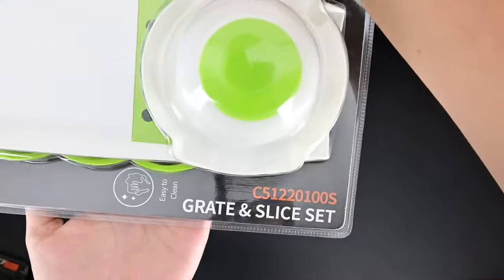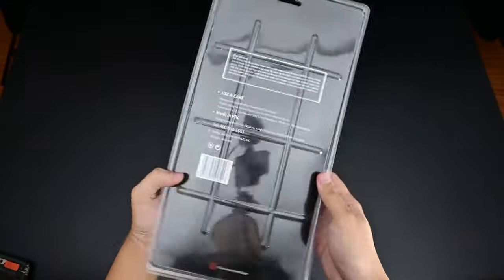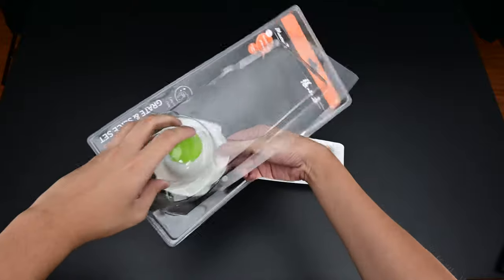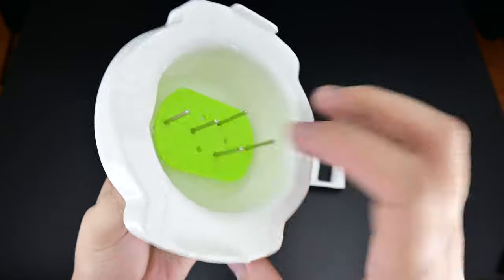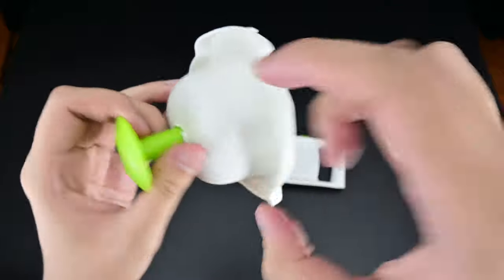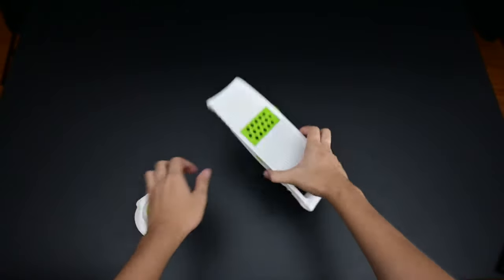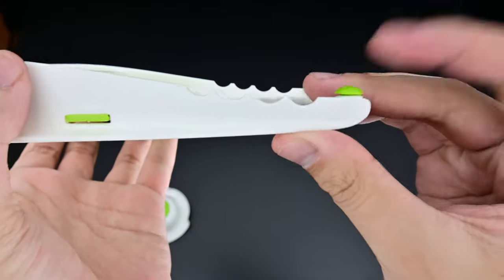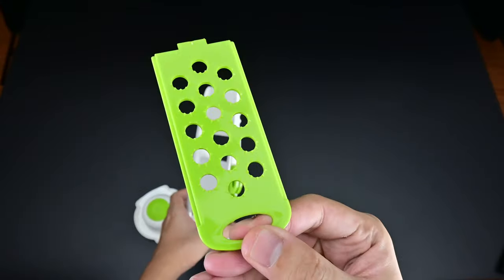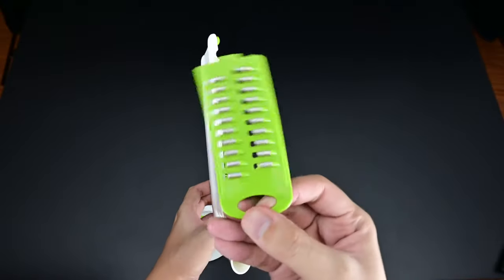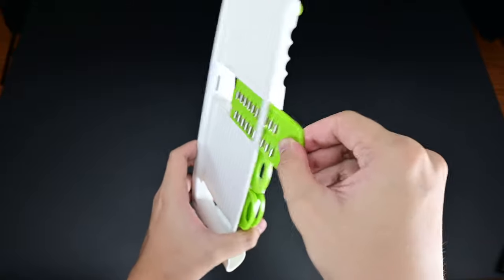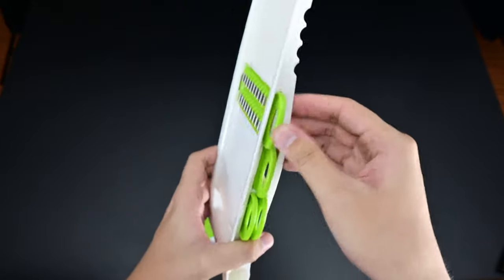This kitchen gadget from Master Z is a 6-in-1 grate and slice set, very similar to a mandolin slicer but it's so much more than that. Very simple unboxing process. You have your hand guard protector so that you don't accidentally slice your finger. The actual mandolin slicer is made of plastic. At the bottom we have a few grates and non-slip rubber feet. Here we have the grater attachment, good for your ginger and garlic. Here we have a julienne slicer for your carrots and other ingredients.